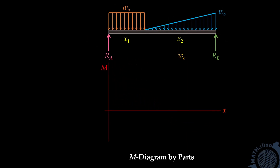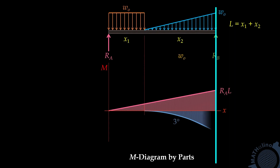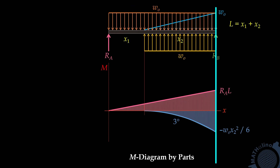Let us now take another example. We have this simple beam with uniform load and uniformly varying load — or what we call a triangular load. Let us take RB as our moment center, so we fix the beam at that point and it acts like a cantilever fixed at RB. The moment diagram due to RA is this triangle, and we have this moment diagram due to the triangular load, which is a cubic spandrel. Similarly to our earlier example, the moment diagram due to the uniform load is a parabolic spandrel, but we cannot draw it directly — we need to extend the uniform load up to the moment center and counter it with another upward uniform load. The moment diagram by parts for the upward uniform load and for the downward uniform load are both shown about RB.